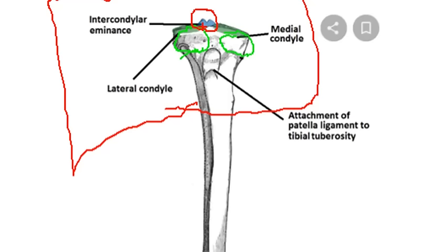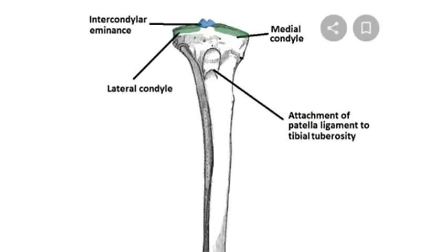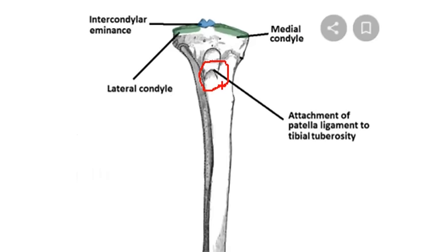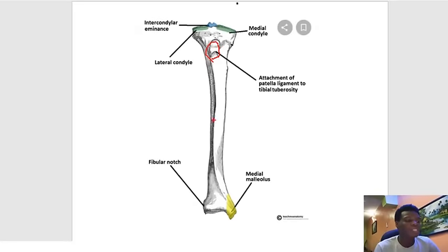The intercondyloid fossa is where the cruciate ligaments take their origin. Also, there is a very important structure called the tibial tuberosity, which is where the patellar ligament or patellar tendon attaches.